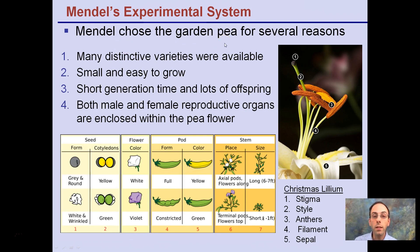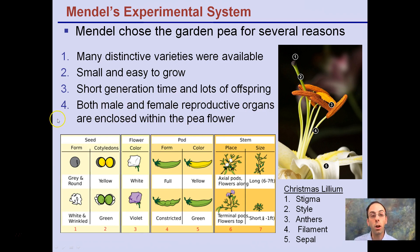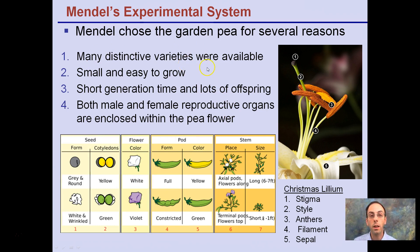He chose garden peas for several reasons. First, many distinctive varieties were available. They're small and easy to grow — you can grow a lot in a small area. Short generation time and lots of offspring are very important when doing scientific tests; you want results to occur quickly and have a large sample size. Both male and female reproductive organs are enclosed within the same pea flower, which helps with pollination. For example, varieties could be tall or short plants, green or yellow pods, white or violet flowers — very distinctive, unlike tomatoes where extensive varieties can be hard to tell apart.